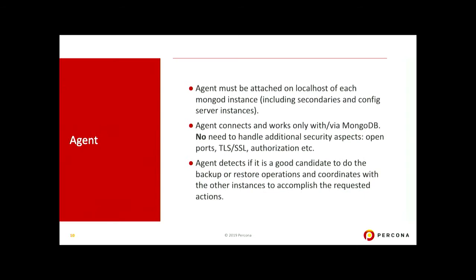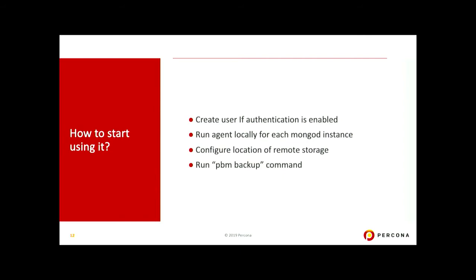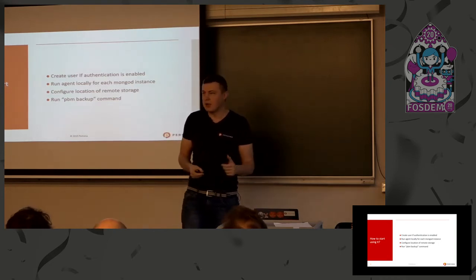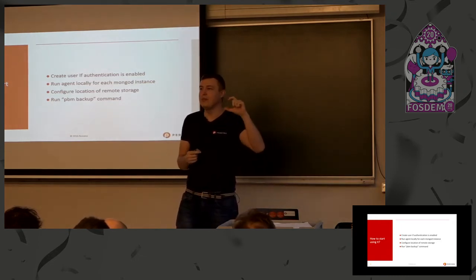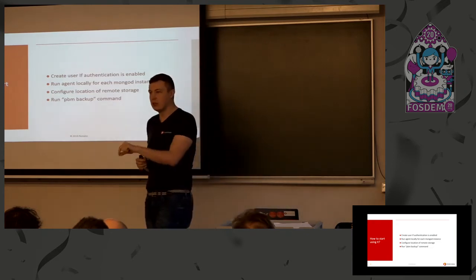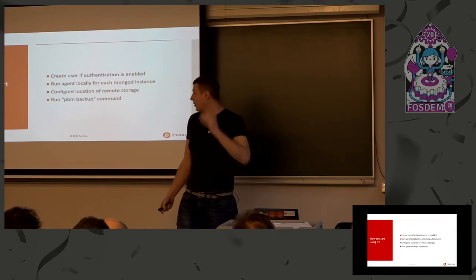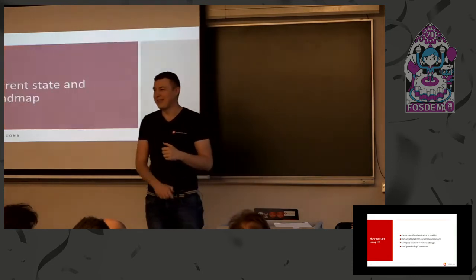We also have a CLI tool that connects to MongoDB and sends commands to agents through MongoDB. To get started, you need to create a special user with all needed permissions — like dumping collections, dumping system collections, and creating system collections. After that, you run the PBM agent locally near each MongoDB process, including config servers, which should also be backed up. Then you configure remote storage and run PBM backup. Very simple.